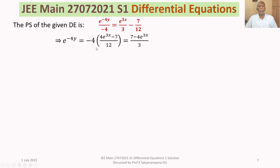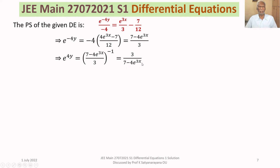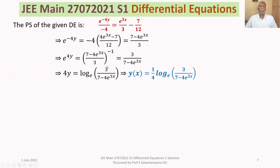Raising both sides to the power of −1 (inverting), we get e^(4y) = 3 / (7 − 4e^(3x)). Taking logarithms on both sides gives 4y = ln(3 / (7 − 4e^(3x))), and therefore y(x) = (1/4) · ln(3 / (7 − 4e^(3x))). This is the particular solution.